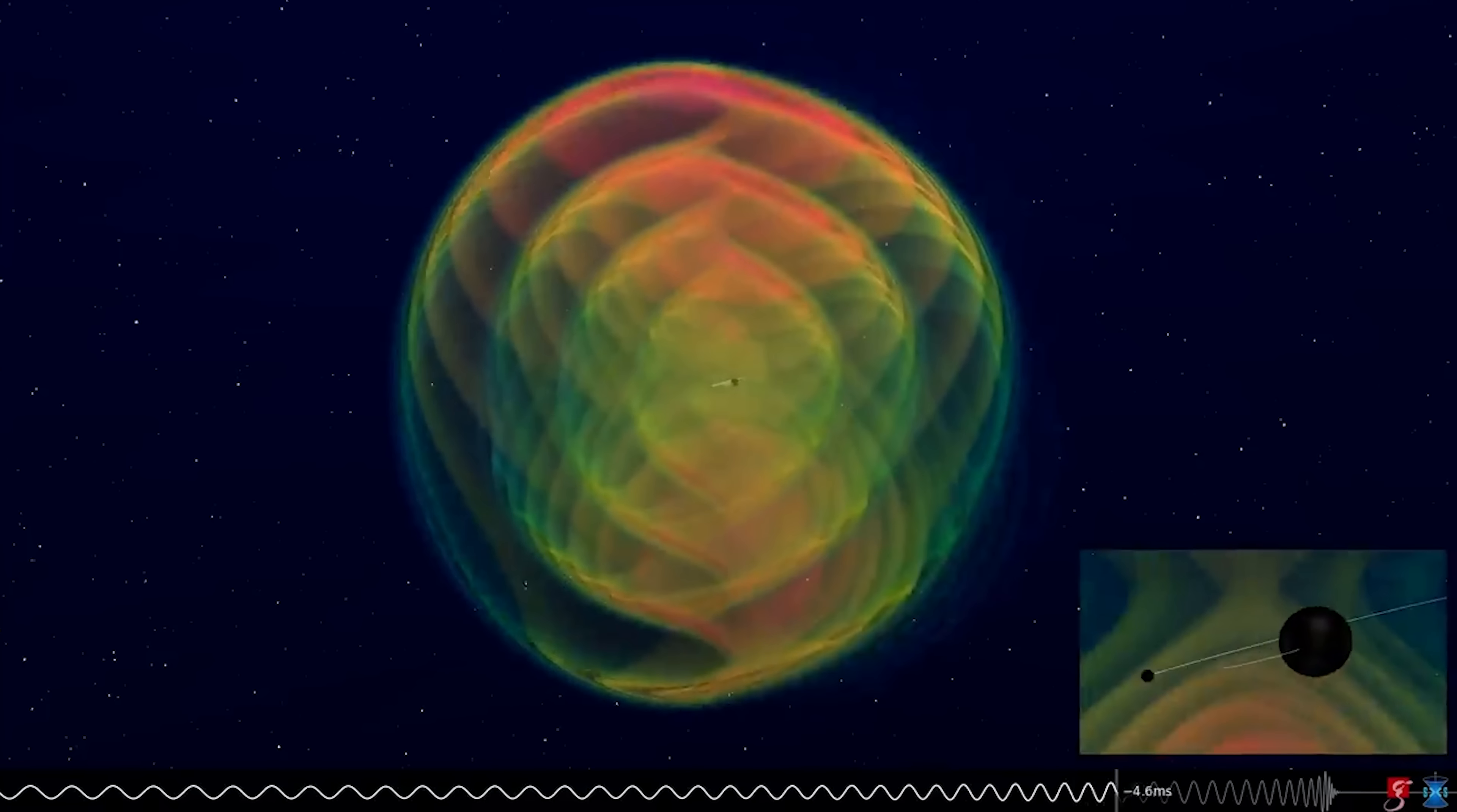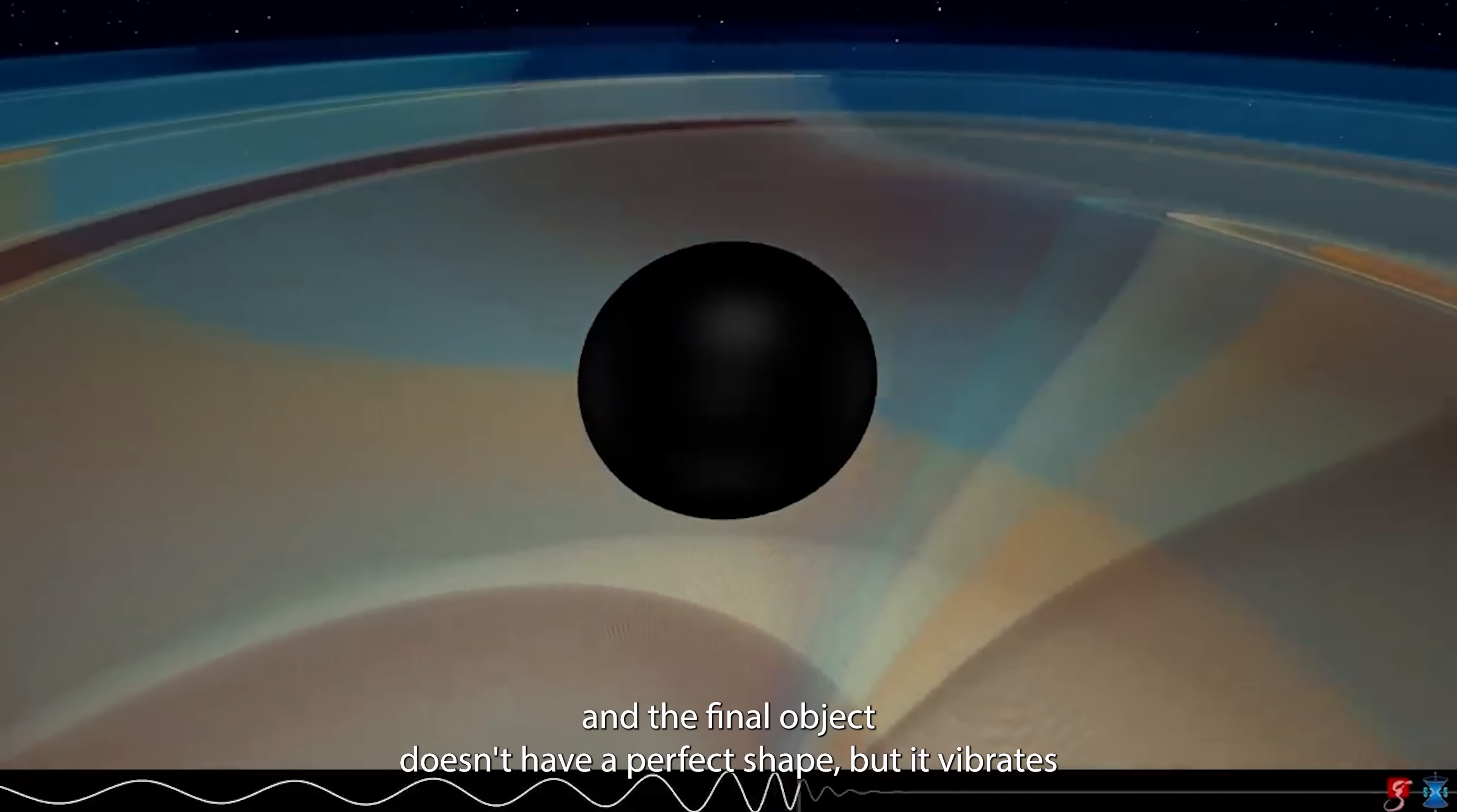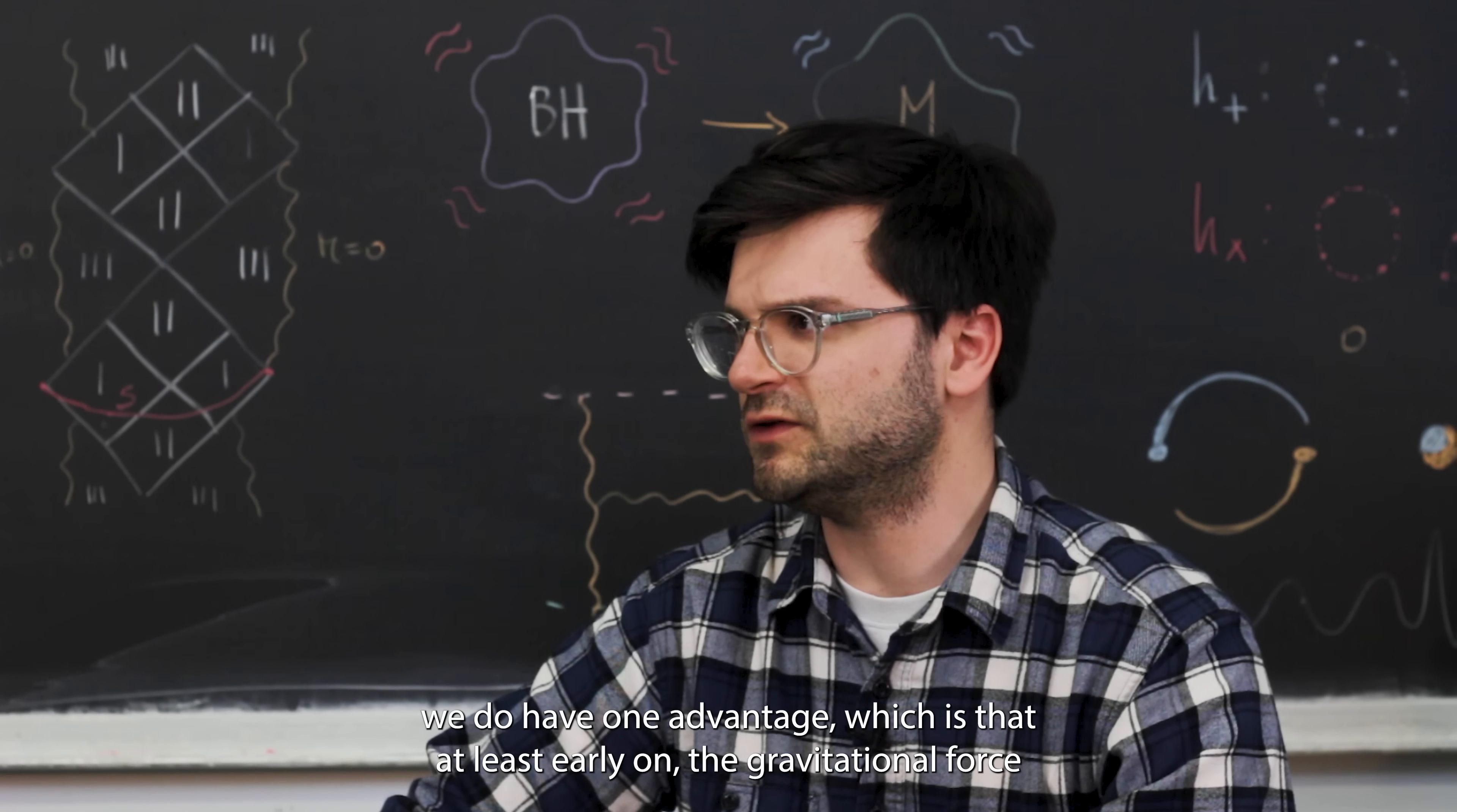The different parts of the signal are associated with the different stages of the merger event. First, we have the inspiral, and this is what I work on. Here, the two black holes or neutron stars orbit each other. As they slowly approach each other, the frequency and the intensity of the gravitational waves increases. Eventually, we have a merger, where the two fall towards each other and then they merge. And after that, we have the ringdown phase, which actually is what Elisa works on. Yeah, that's right. The ringdown is the final stage of a merger when a final remnant is formed. The final object doesn't have a perfect shape, but it vibrates and it emits gravitational waves that are dampened in time. It looks like a bell that rings loud, and then the sound becomes quieter. Okay, so to recap, we have the inspiral, the merger, and the ringdown. And our goal is to produce the signal for all these different stages.